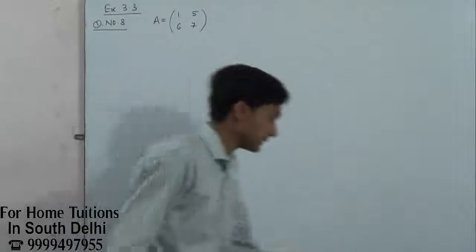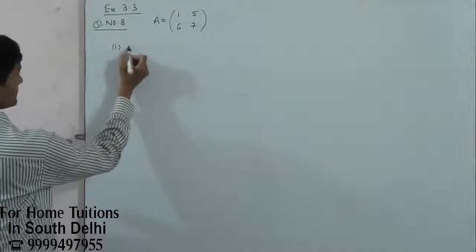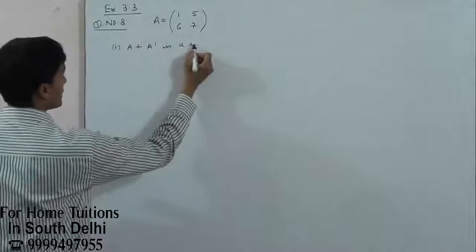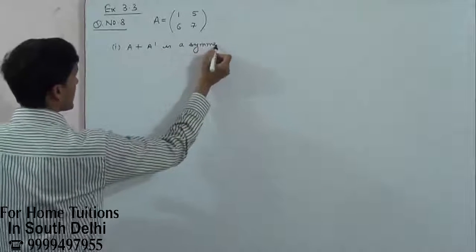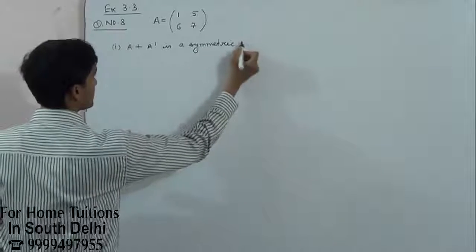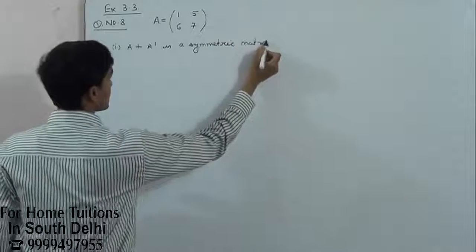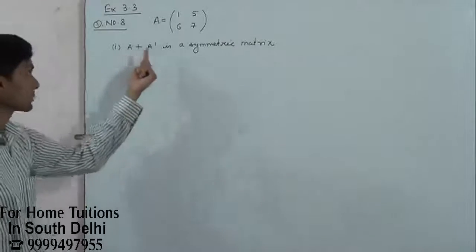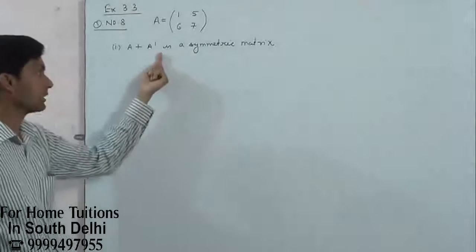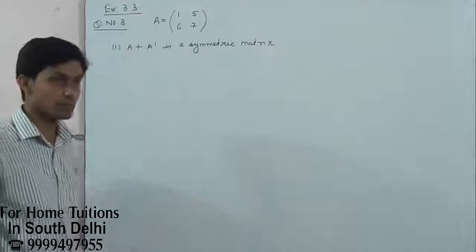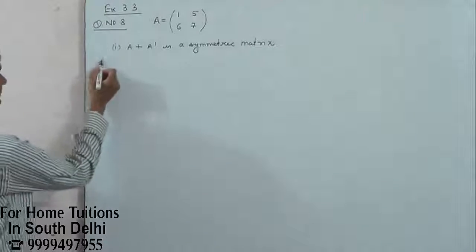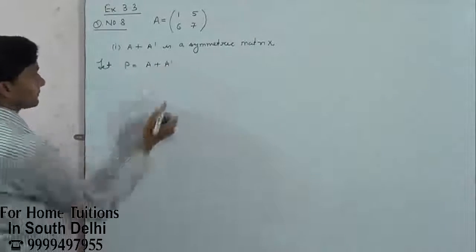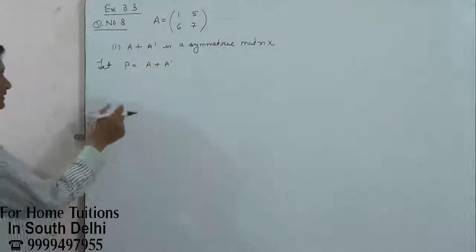Verify that A plus A dash is a symmetric matrix. If you have to write a matrix, then it will be a symmetric matrix. So let P equals A plus A dash. Now, how do you see this?